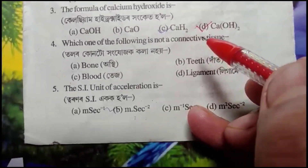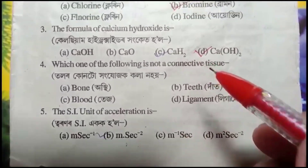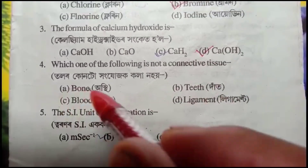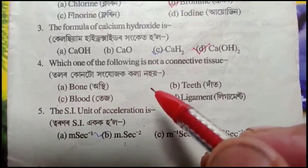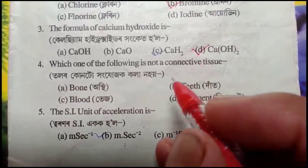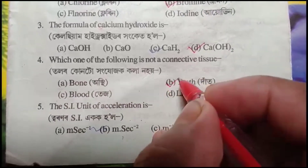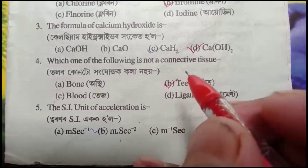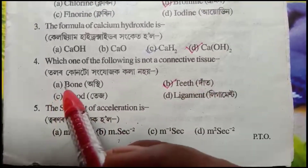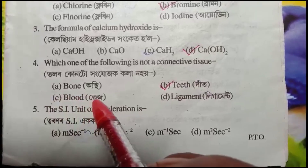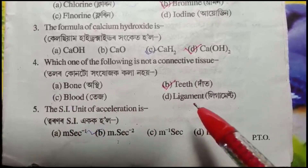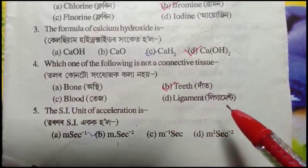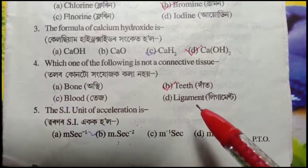Option D. Question number 4: Which one of the following is not a connective tissue? The options are bone, oste, blood, and ligament. The answer is that it is a connective tissue.